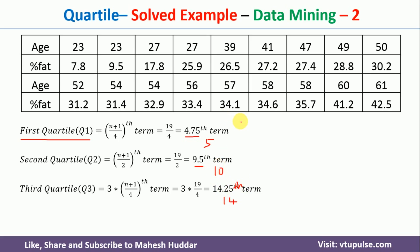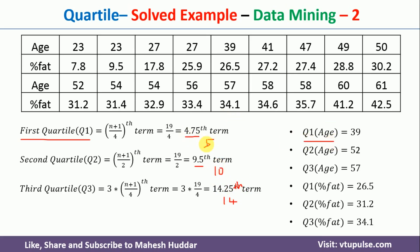Q1 of age is equal to the 5th term, which is 39. Q2 of age is the 10th term, which is 52. Q3 of age is the 14th term, which is 57. For percentage fat: Q1 is the 5th term, which is 26.5; Q2 is the 10th term, which is 31.2; and Q3 is the 14th term, which is 34.1.